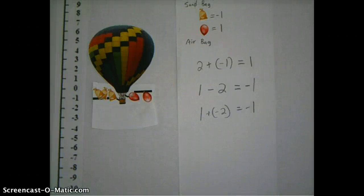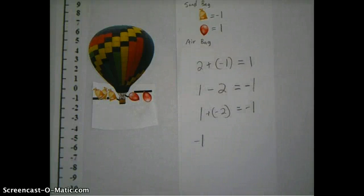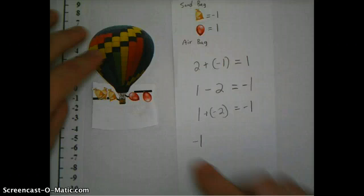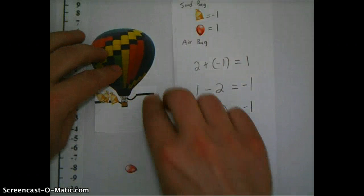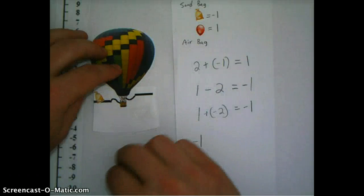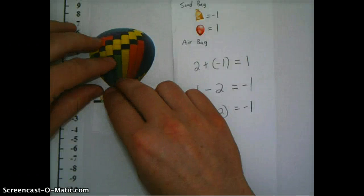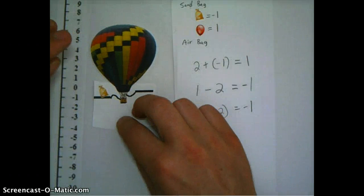Okay, let's try another example. Let's say we're going to start off at an altitude of minus one now. Okay, so I'm going to take away all of this except for one of the sandbags. That's going to give me an altitude of minus one. So I have one sandbag on there. I'm at an altitude of minus one.